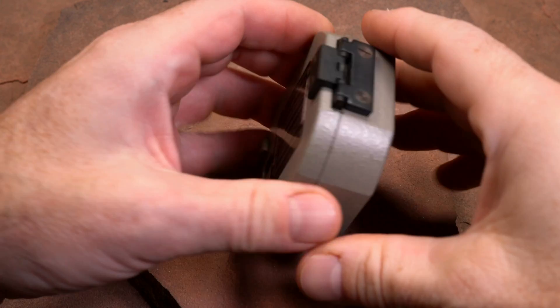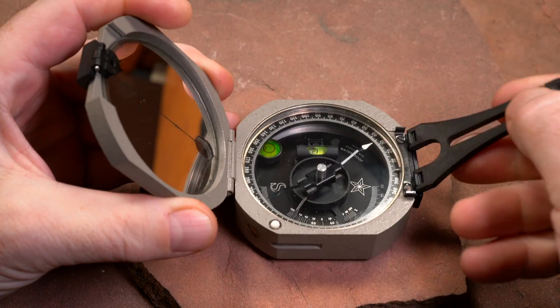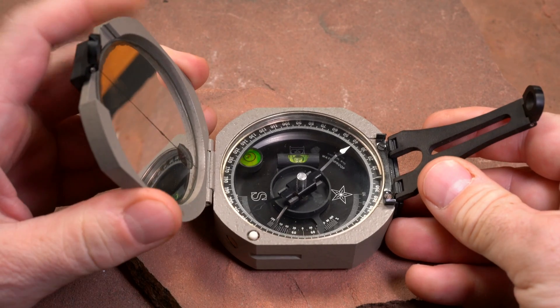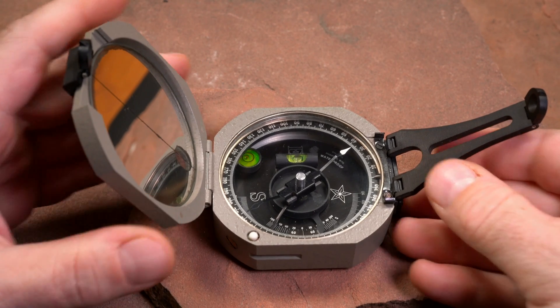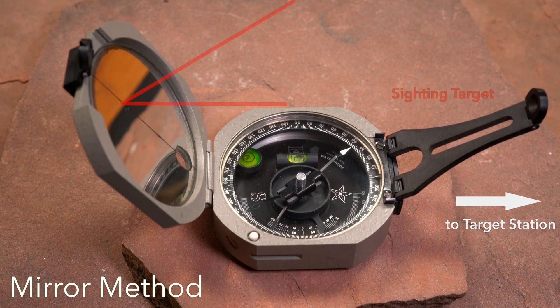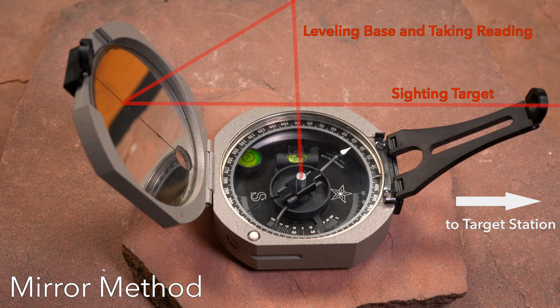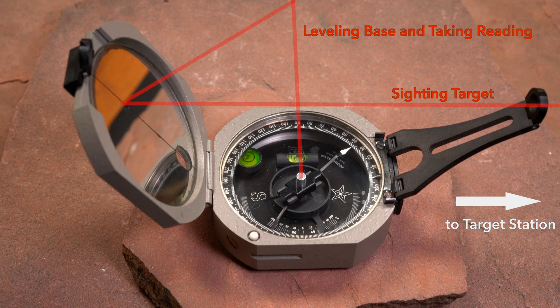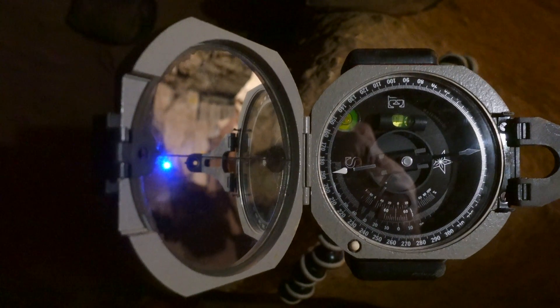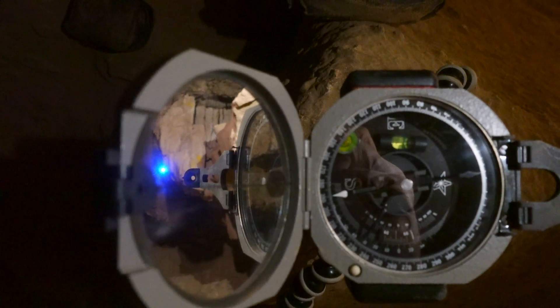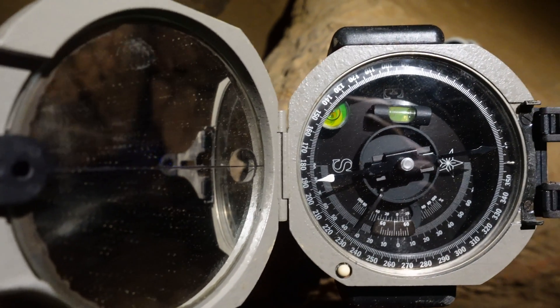The mirror method is the most often used and is probably the best when you're in larger cave passage. You position the pocket transit directly above or below the station you're shooting from, and you get your eye directly above the face for taking measurements. The mirror is open to about 135 degrees and the large sight is open most of the way and pointed towards the target station. You position yourself directly above the face and tilt the mirror and rotate the base until the target can be seen in the mirror. The sighting line on the mirror is aligned with a pointer at the top of the large sight and the target station.